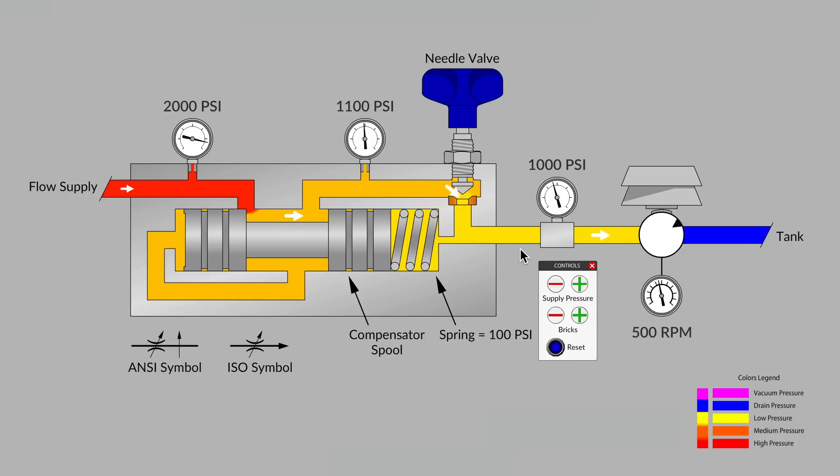We noticed that was done by taking the load pressure through a load sensing passage, combining it with a 100 psi spring. Adding those two values together is what accounts for the pressure value preceding the needle valve.